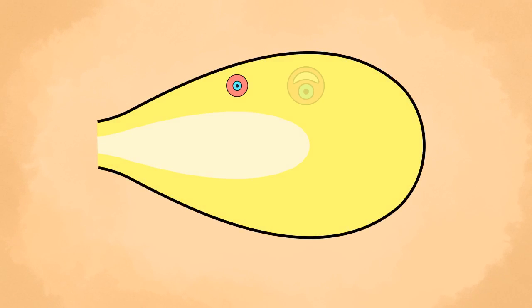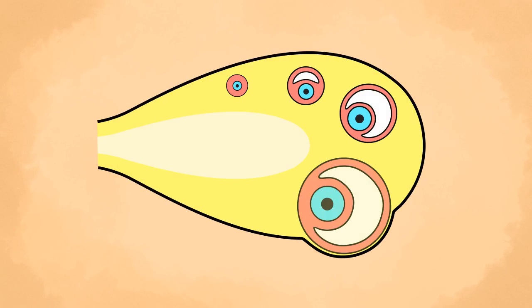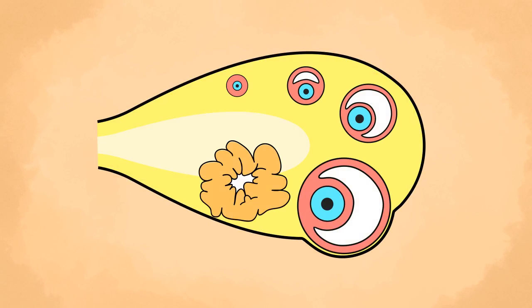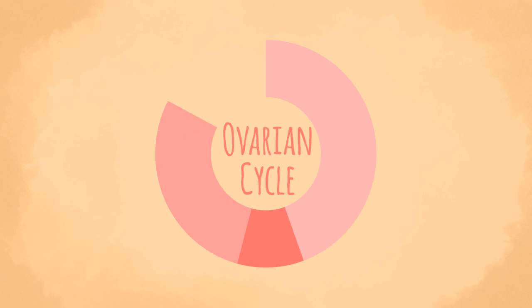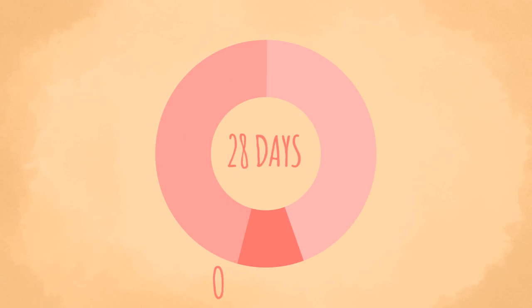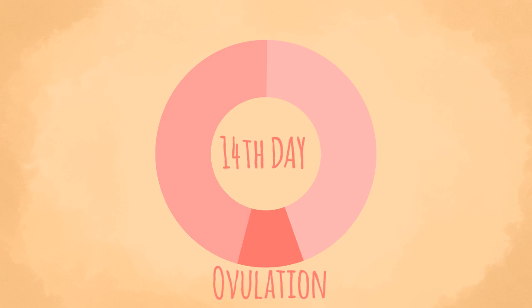The series of changes that begin with the formation of an ovarian follicle and end with the degeneration of the corpus luteum constitute what is called an ovarian cycle. An ovarian cycle has an average duration of 28 days, with ovulation occurring at mid-cycle, i.e., on the 14th day.